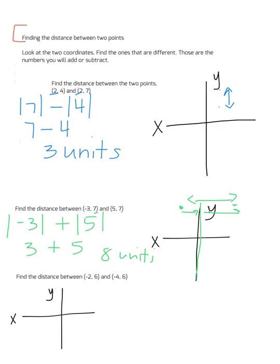Go ahead and pause the video and take a look at the third one, and then you can come back and answer that. Hopefully you've noticed that your 6s are the same, so you're looking at a horizontal distance — the difference between the x-coordinates. We have (-2,6) right around here and (-4,6) right around here. So we're looking at the absolute value of negative 4 minus the absolute value of negative 2, which is simply 4 minus 2, giving you 2 units.